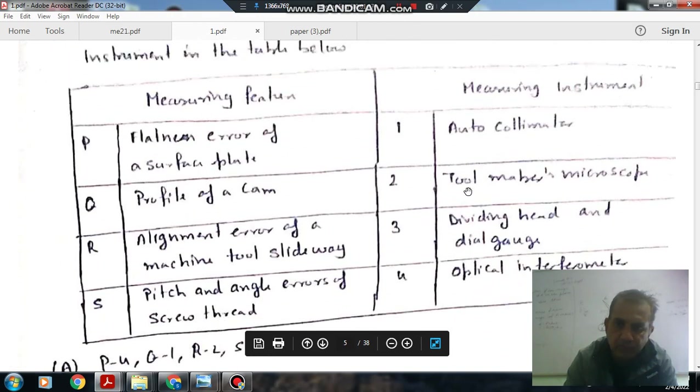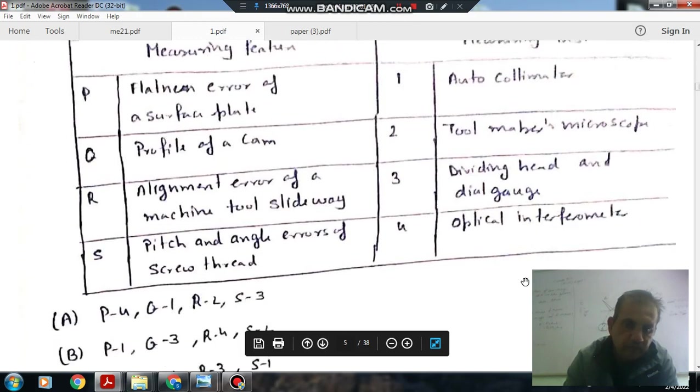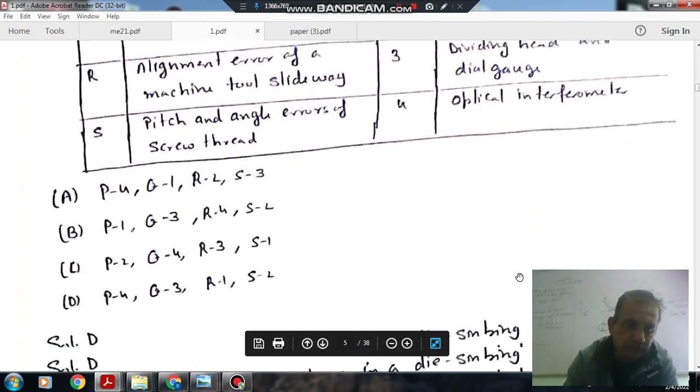The instruments are: auto-collimator, tool-makers microscope, dividing head and dial gauge, and optical flat parameter. So answer is D.